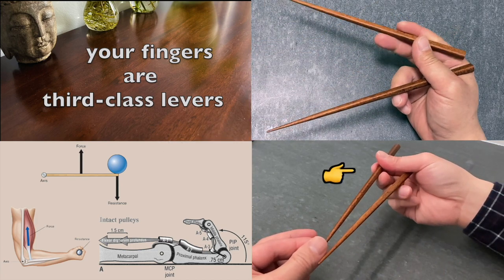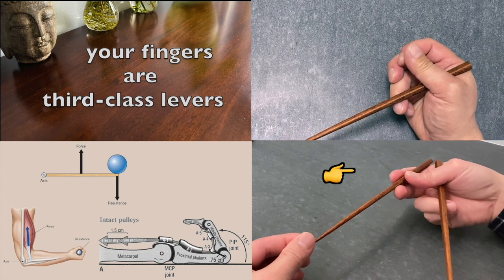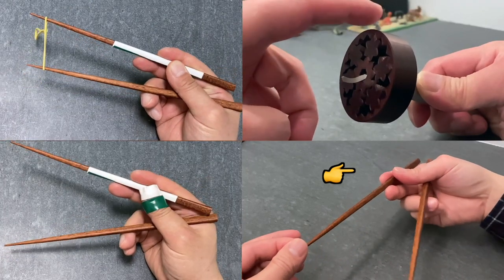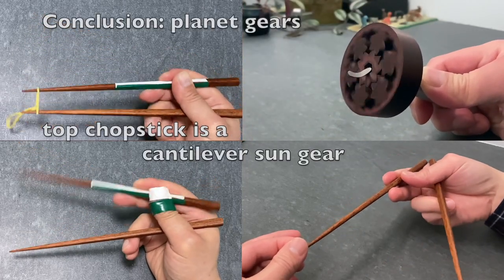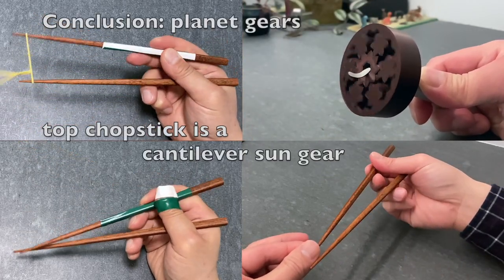Now, focus on these three fingers. Do you see how they roll the top chopstick? The top chopstick has become a cantilever sun gear, snugly surrounded and rolled by three planet gears. Your fingers.